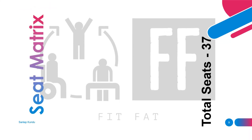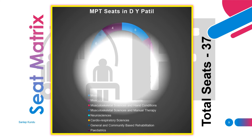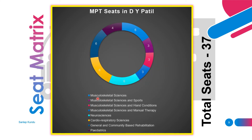Now the seat matrix. There will be a total of 37 seats: 6 seats for musculoskeletal sciences, 3 seats each for musculoskeletal sciences and sports, musculoskeletal sciences and hand condition, and musculoskeletal sciences and manual therapy. For neurosciences there will be 6 seats, cardiorespiratory sciences 6 seats, general and community-based rehabilitation 6 seats, and pediatrics 4 seats.